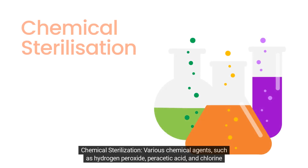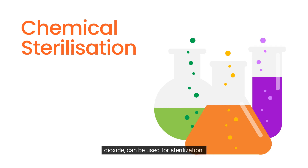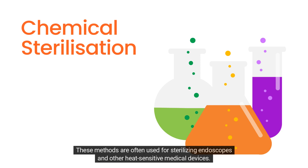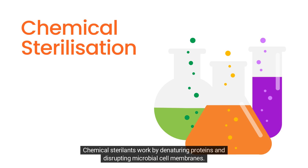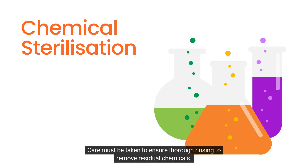Chemical sterilization: various chemical agents, such as hydrogen peroxide, peracetic acid, and chlorine dioxide, can be used for sterilization. These methods are often used for sterilizing endoscopes and other heat-sensitive medical devices. Chemical sterilants work by denaturing proteins and disrupting microbial cell membranes. Care must be taken to ensure thorough rinsing to remove residual chemicals.